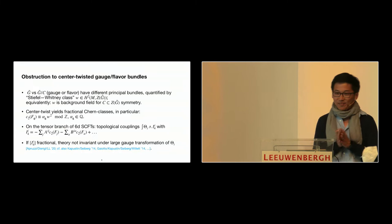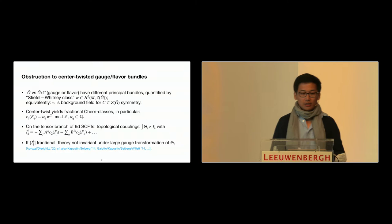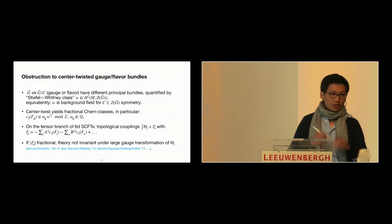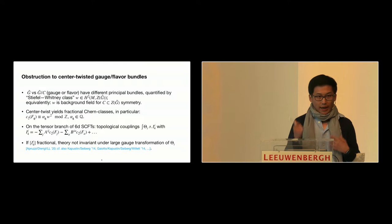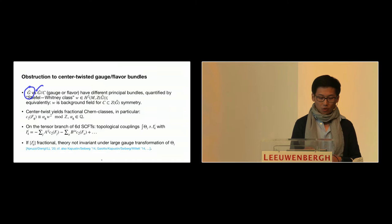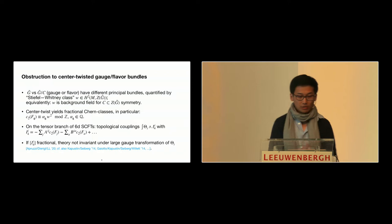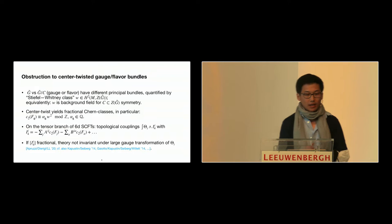So how do we characterize the global group? We've heard this morning about how symmetries act on local and extended operators. From a bottom-up field theory perspective, a difference in the global structure of your symmetry group — whether gauge or flavor — manifests itself in the way you can write down a principal bundle valued either in G or G mod C. The difference between these two is typically measured by some cohomology class typically referred to as the Stiefel-Whitney class W.